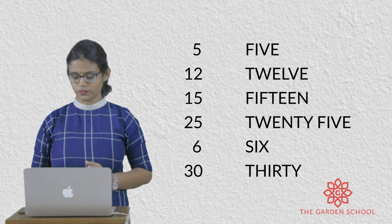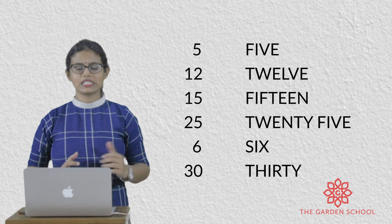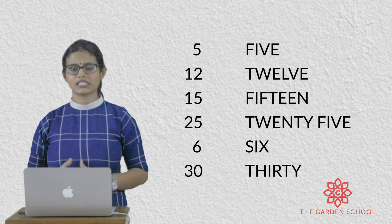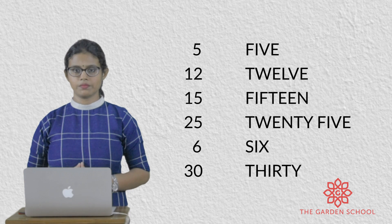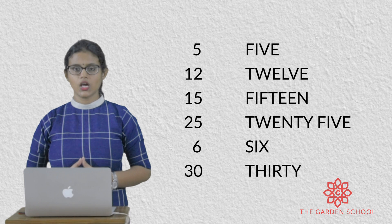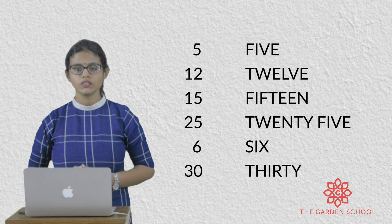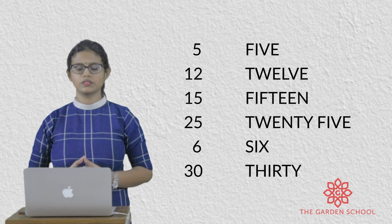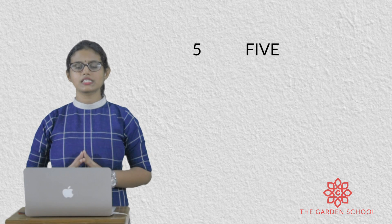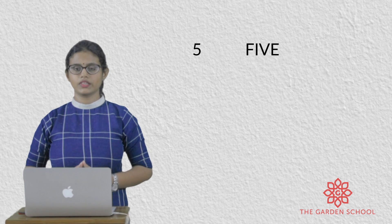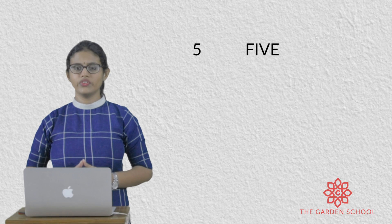You have also learnt about number names. Here you can see on one side there are some numbers and on the other side there are number names. So what we are going to do is identify the numbers with their number names. What is the first number? The first number is 5. So we have to identify its number name. That is F-I-V-E.